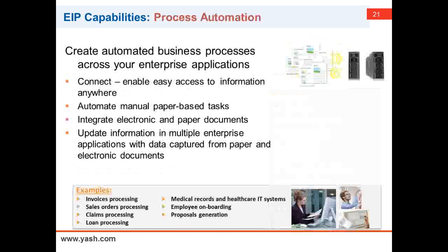Another capability is the process automation piece. This capability controls all of the other adapters and capabilities that we have and integrates them with the human workflow — it is more of the control center. It allows you to integrate the OCR capability, the report generation capability, and then connects to different enterprise applications or cloud applications, bringing it all together and including the human workflow aspect. This capability makes sure everything is communicating with each other and makes it easy for us to create solutions in a timely manner.